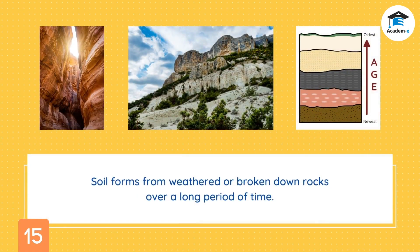Soil forms from weathered or broken-down rocks over time — a process that can take thousands of years or more. Rock surfaces break down gradually as they are constantly exposed to heat and pressure like wind and water. After some time, a layer of soil forms on top of the rocks, and the process continues until the soil is fully formed. Soil is an important resource that supports many living things, mainly by providing them nourishment and a stable home to grow.